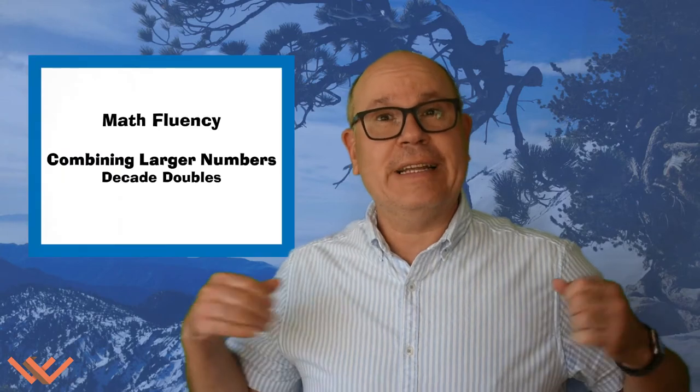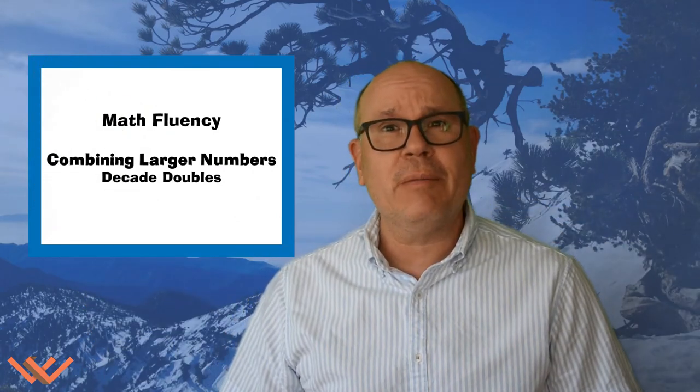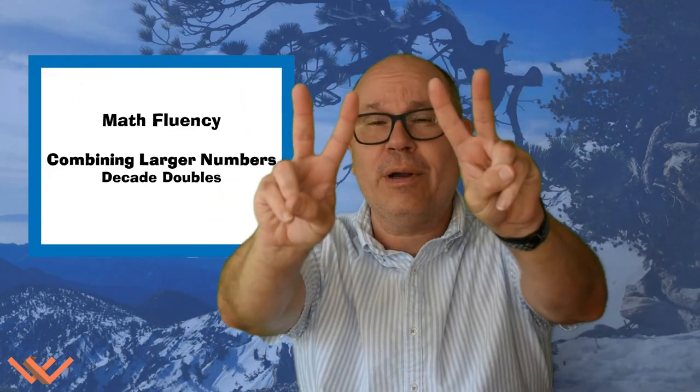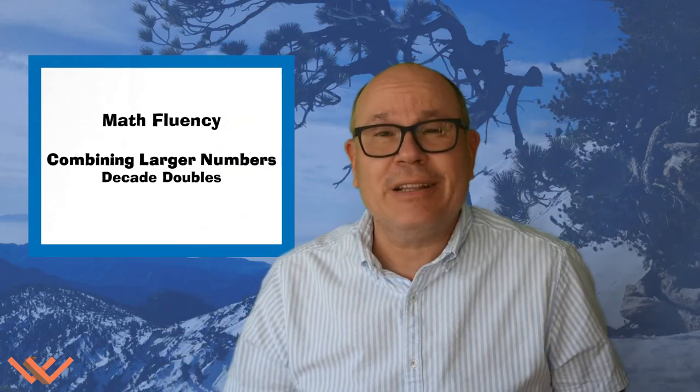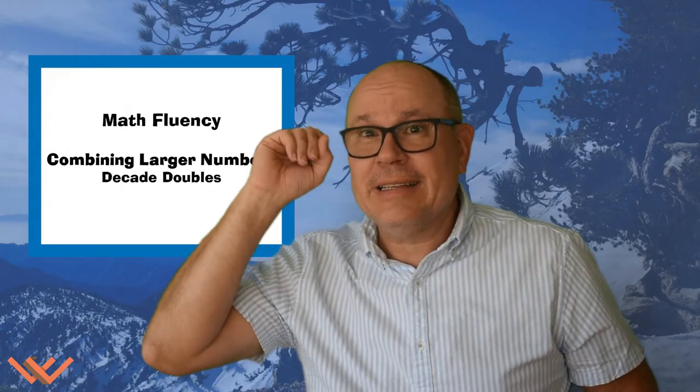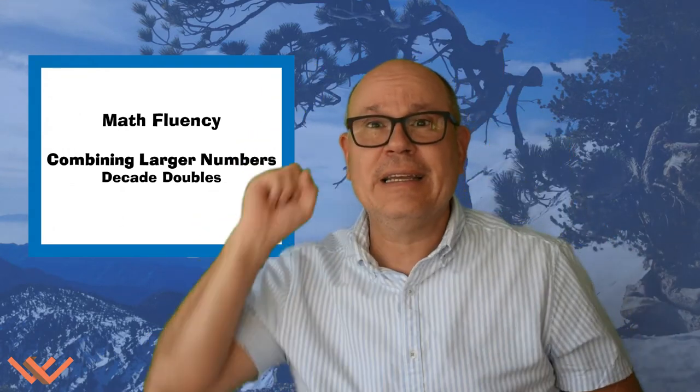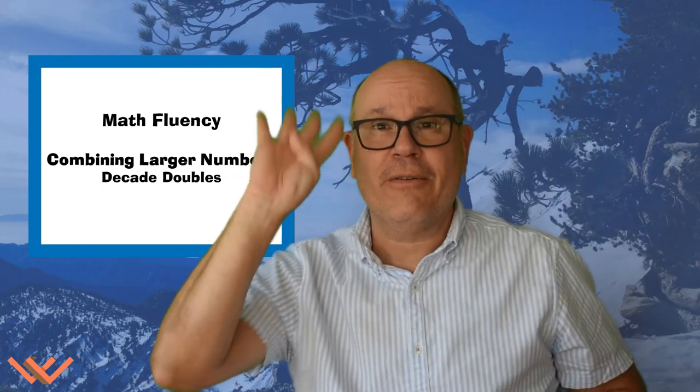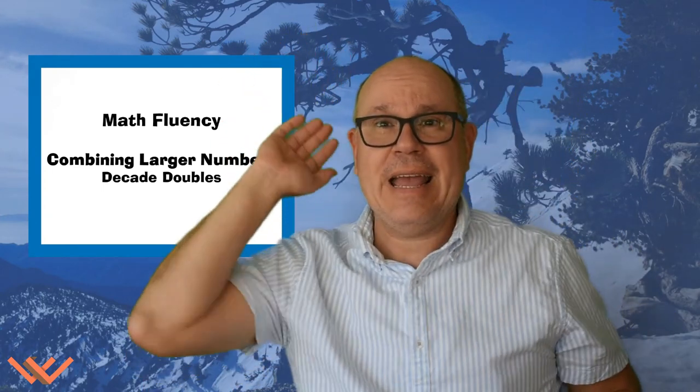Hey, I'm really excited about this because we're starting Decade Doubles! What are Decade Doubles, you may ask? Well, you remember what doubles are. One and one make two, two and two make four, three and three make six, four and four make eight, and five and five make ten. Now we're just putting a zero after that. Ten and ten make twenty, twenty and twenty make forty, thirty and thirty make sixty, forty and forty make eighty. And fifty and fifty make one hundred.